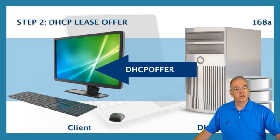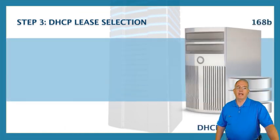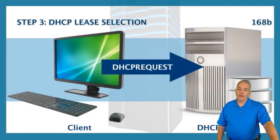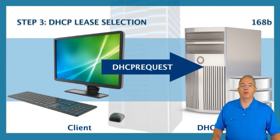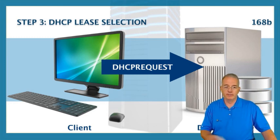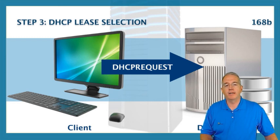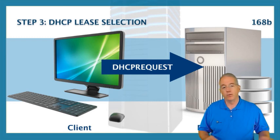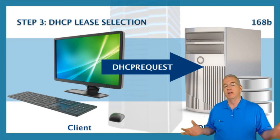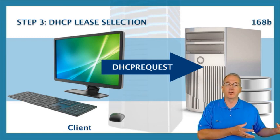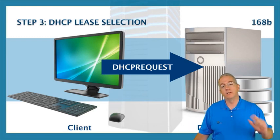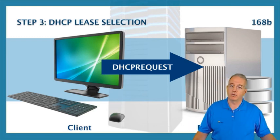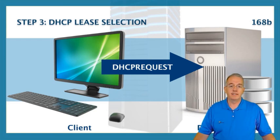The client doesn't own that address yet, so it broadcasts back a DHCP Request. This is called lease selection in your book. The DHCP Request is broadcast out and it identifies which IP address it would like to have. The reason it is broadcast again is so that all the DHCP servers that it didn't pick know it doesn't want their address, and they can put it back in the pool. It still doesn't own the IP address, so there's no IP address in the source, but you do have the MAC address.